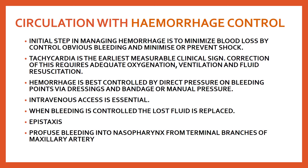Hemorrhage is best controlled by direct pressure on bleeding points via dressings, bandage, or manual pressure. Intravenous access is necessary and essential with large-bore intravenous catheters. When bleeding is controlled, lost fluid must be replaced — ideally the patient should be given whole blood that has been properly typed and crossmatched. During fluid management, vital signs are assessed while monitoring blood pressure, pulse, urinary output, and central venous pressure.